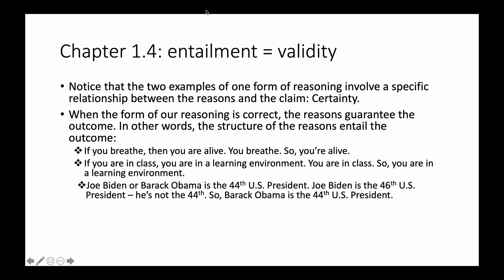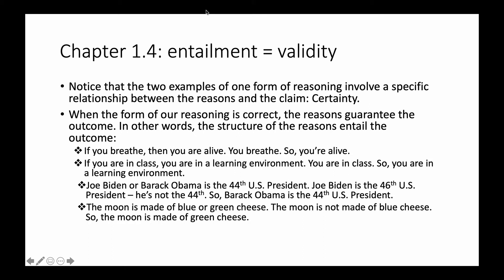Let's look at another example. Joe Biden or Barack Obama is the 44th president of the United States. Joe Biden is the 46th U.S. president — he's not the 44th — so Barack Obama is the 44th. This has the same form as the prior reasoning, but different content. Similarly: the moon is made of blue or green cheese; the moon is not made of blue cheese; so the moon is made of green cheese. It's the form that generates entailment — the form forces us to accept the inference, and assuming the first two sentences are true, the third must be true.